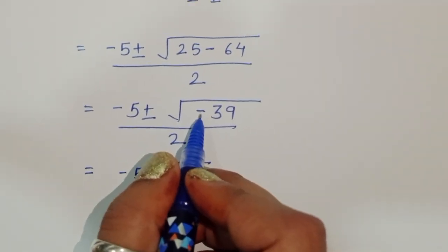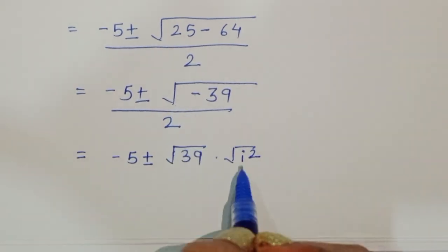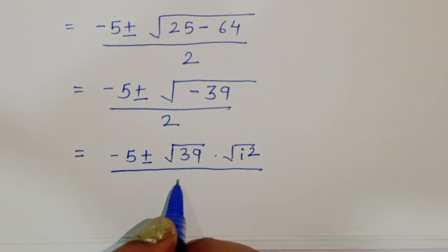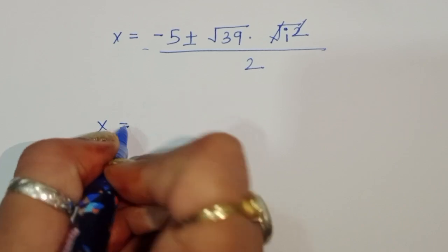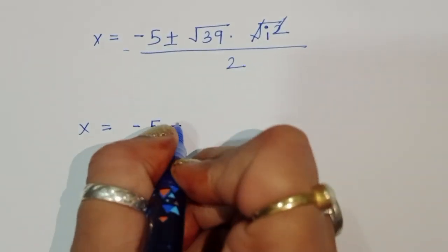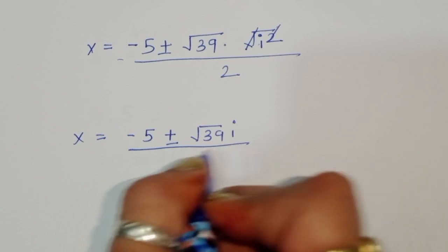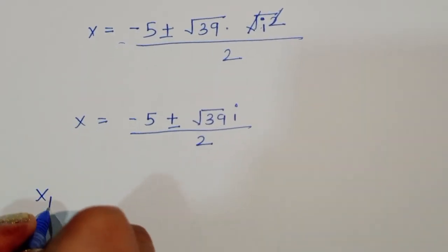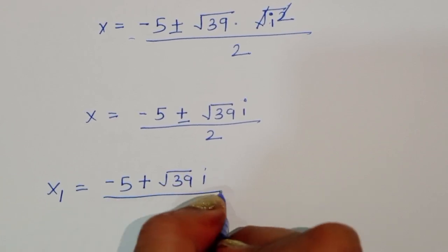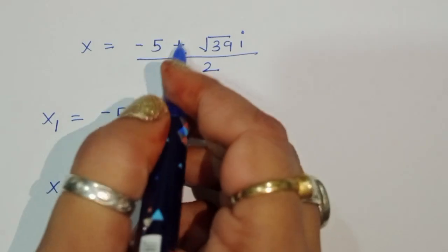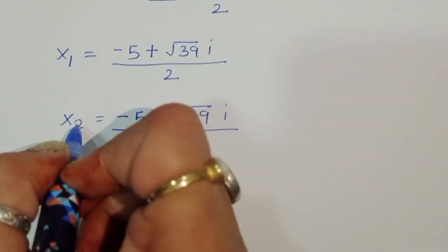Since √(-39) = √39 · i, we get x = (-5 ± √39 · i) / 2. So x₁ = (-5 + √39 i) / 2 and x₂ = (-5 - √39 i) / 2. These are imaginary solutions.